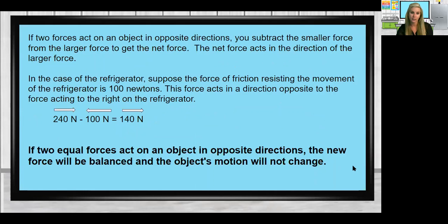If two forces are acting on an object in opposite directions, you subtract the smaller force from the larger force to get the net force. The net force acts in the direction of the larger force. In the case of the refrigerator, suppose the force of friction resisting the movement of the refrigerator is 100 Newtons. This force acts in the direction opposite to the force acting to the right on the refrigerator.